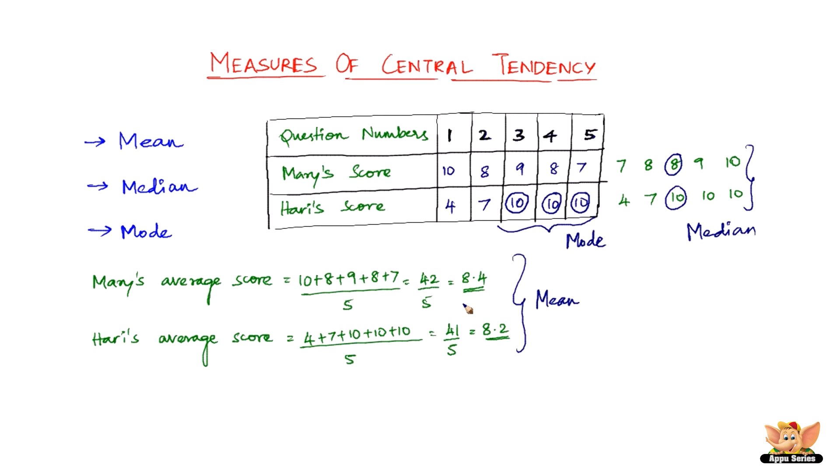Before I conclude here, as you can see, we've got three different methods of finding the central tendency, and not every method is the same. If you see mean, it gives you one result saying that Mary's performance is better. If you look at median, it says Hari's performance is better. If you look at mode, it says Hari's performance is better. Each one has got its own advantages and disadvantages, and each one has got its own different way of finding out which performance was better. Let us not worry about all those things, but let us just look into what is mean, median, and mode in the forthcoming videos in detail.